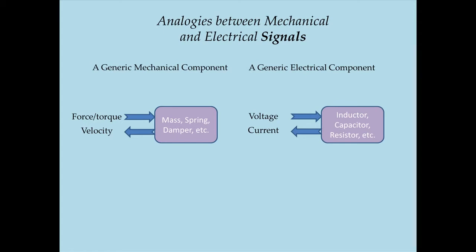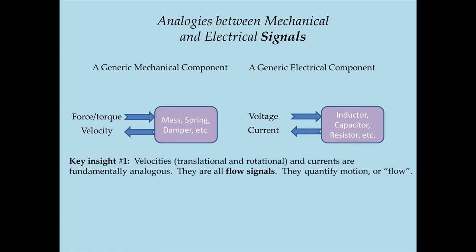When you look at these two diagrams, you begin to see three very big insights. The first key insight is that there is an analogy between the motion of masses, springs, and dampers and the motion of electrons — they're both motions, both flows in an expansive sense of that term. In other words, velocities — translational or rotational — and currents are fundamentally analogous. They're all flow signals; they all quantify motion.